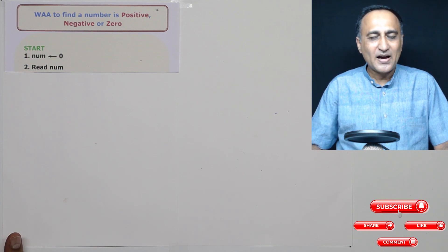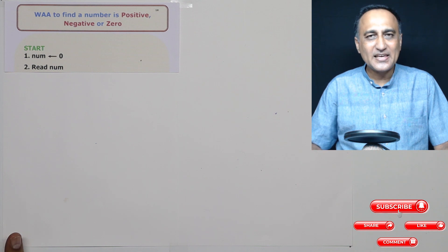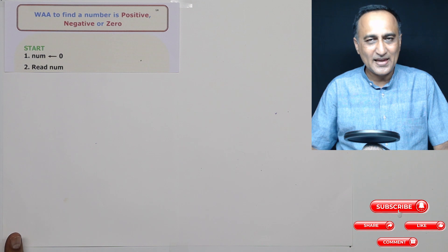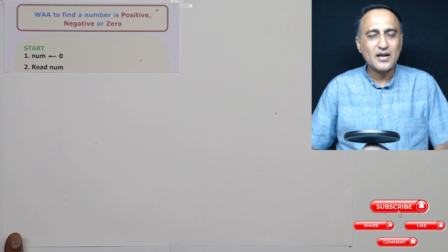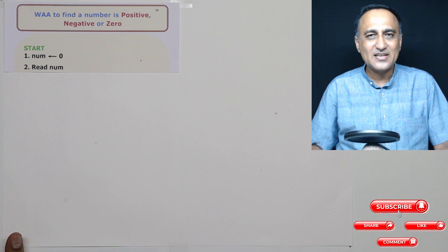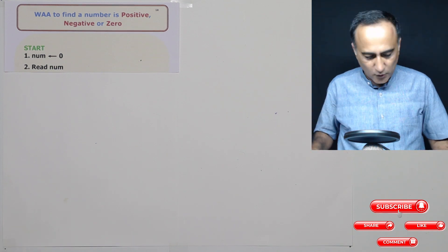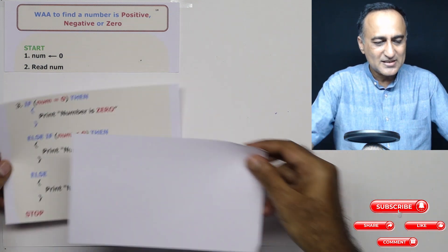So after the if, I write else if number less than zero, then print number is negative. So I have taken care of positive number, I have taken care of negative number. And last when I come to the else, automatically the number has to be zero. So let's take a look at the code for it to make more sense to you.